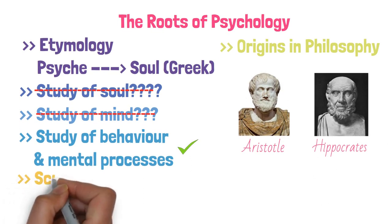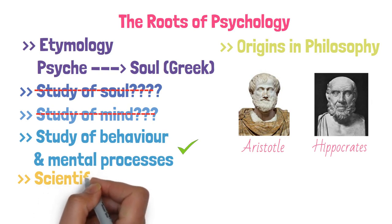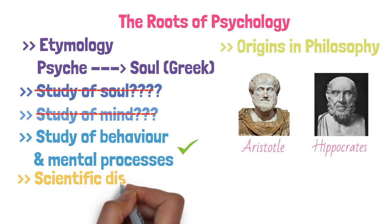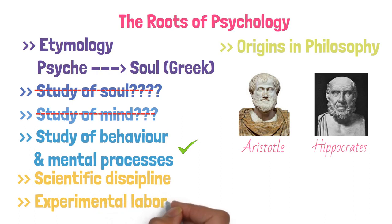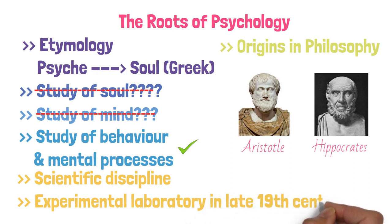Psychology as a scientific discipline was strengthened by many important historical milestones in the field. One major such event was when the first psychological experimental laboratory was established in the late 19th century by Wilhelm Wundt.